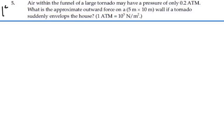Here's problem 14.5. Air within the funnel of a large tornado may have a pressure of only 0.2 atmospheres. What is the approximate outward force on a 5 meter by 10 meter wall if a tornado suddenly envelops a house? One atmosphere is 10 to the 5 newtons per meter squared.